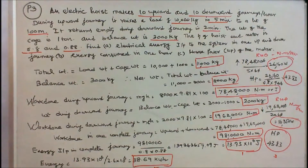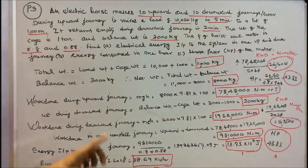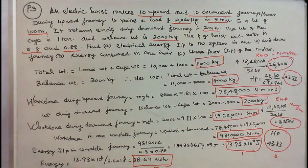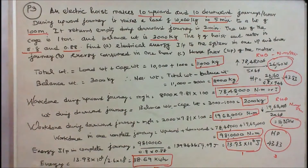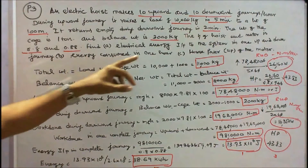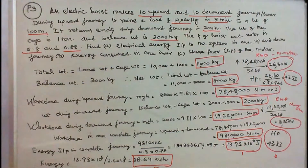Next, we find energy consumed in one hour. 1 joule is equal to 1 divided by 3.6 into 10 power 6 kWh. Input is 13.93 into 10 power 6 divided by 3.6 into 10 power 6, that is equal to 38.69 kWh. Energy consumed in one hour is 38.69 kWh.